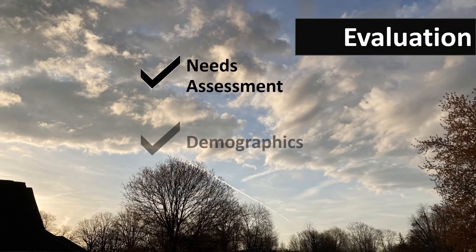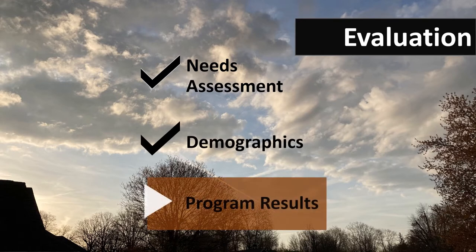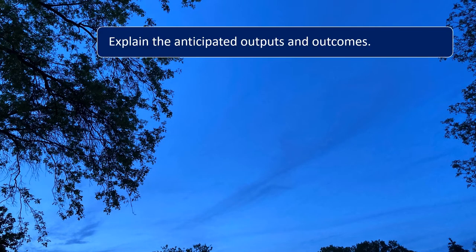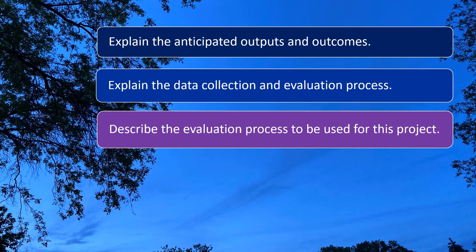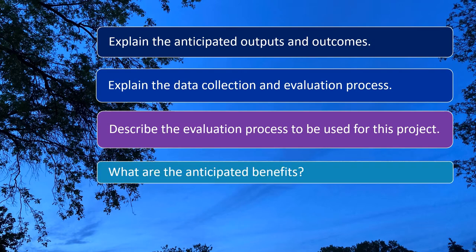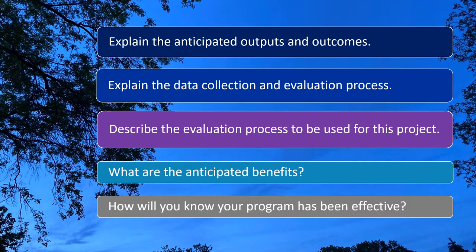Lastly, the data type called evaluation. So far, we have gathered data for the community and people to be served. Now we use data that records your program's results. Grant proposals ask this in multiple ways, all with a general theme: explain the anticipated outputs and outcomes; explain the data collection and evaluation process; describe the evaluation process to be used for this project; what are the anticipated benefits; or, how will you know your program has been effective? Evaluation very often comes in two parts: outputs and outcomes.